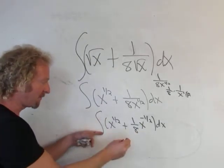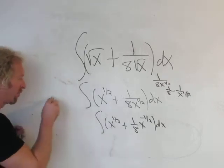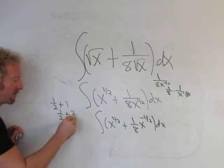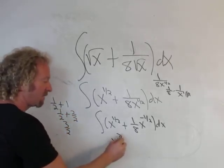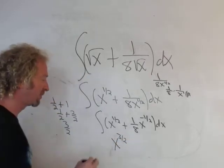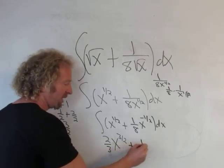So now we drop the integral sign and we integrate. We're adding 1 to 1 half. So 1 half plus 1, that's really 1 half plus 2 halves, that's really 3 halves. So that's x to the 3 halves. And when you divide by 3 halves, you really multiply it by the reciprocal, so it's 2 thirds plus 1 eighth.